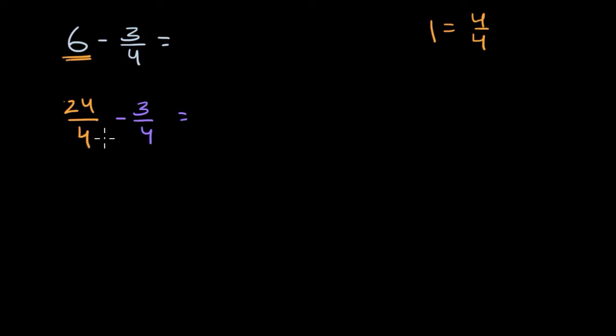Well, if I have 24 of something minus 3 of something, that's going to be 21 of that something. So 24/4 minus 3/4 is 21/4.